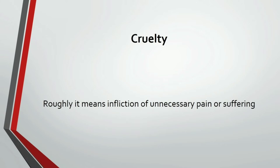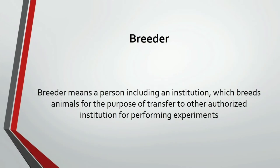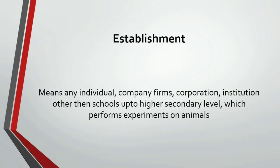The second definition is of cruelty. Cruelty is defined as the infliction of unnecessary pain or suffering. Infliction means something unpleasant, so if you give any unnecessary pain to an animal, it is called cruelty. Next is breeder. Breeder means a person, including an institution, which breeds animals for the purpose of transfer to other authorized institutions for performing experiments. When you or your institution wants to buy animals for experiments, you approach any person or institution that sells these animals to you — that person or institution or company is called a breeder.